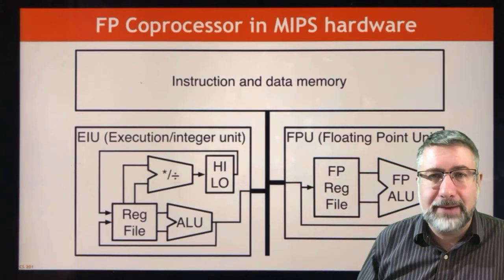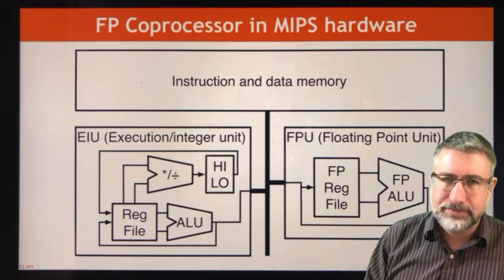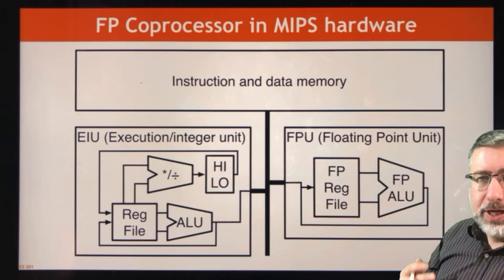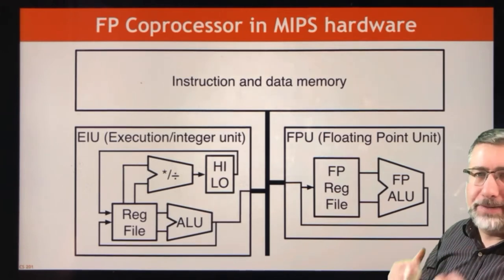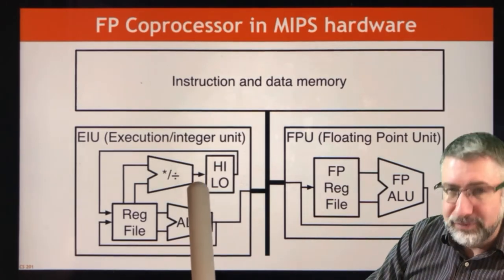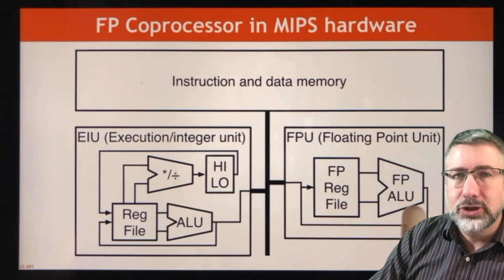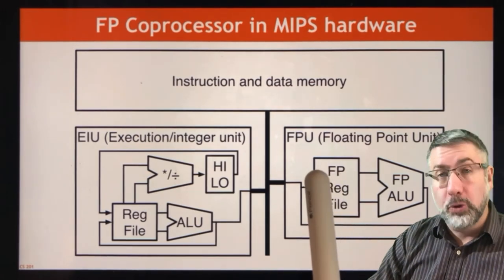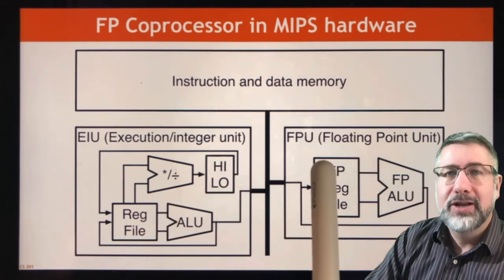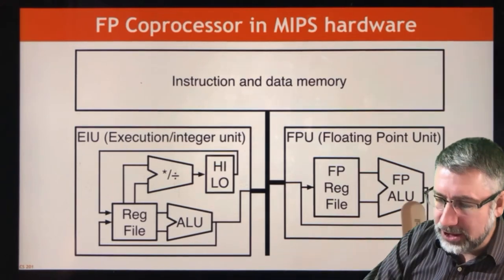This describes the process MIPS uses to do floating point math. They have what we call a coprocessor, which is a separate ALU, a separate data path, a separate set of registers that you can transfer information back and forth from the regular CPU to the floating point coprocessor and back again. The regular CPU does most of the regular work, and the floating point coprocessor just does floating point math, so it has specialized hardware.